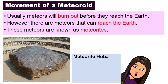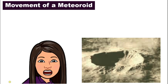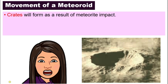The meteorite you see in this picture is given a name — it is the Hoba meteorite. It is one of the largest meteorites in the world, and it is located in Namibia, a country in Africa. Because of the impact when the meteorite reaches the Earth, it causes a collision — it falls into the ground.